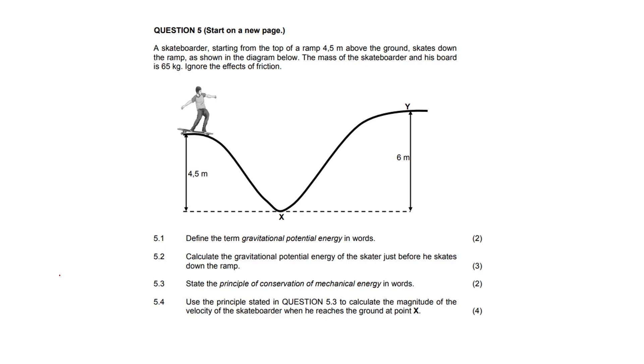Hi guys, we're going to take a look at this question where we have a skateboarder starting from the top of a ramp above the ground. He skates down the ramp, and the mass of the skateboarder is 65 kg. We have to ignore the effects of friction.